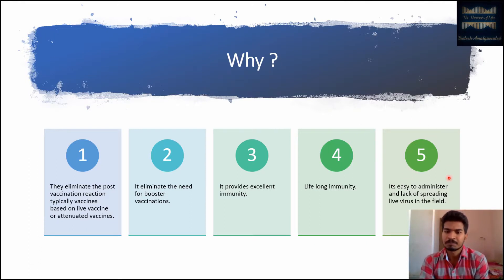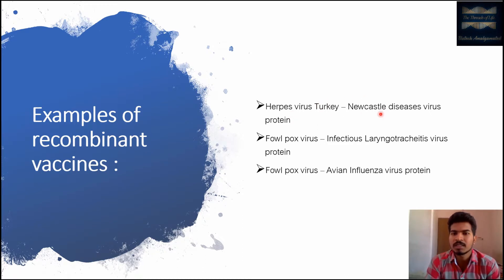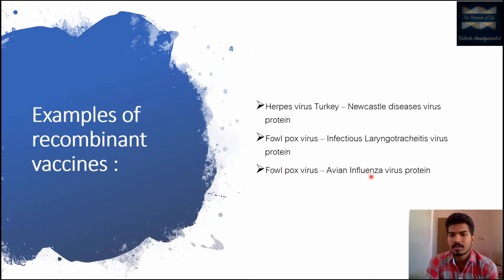Here are several examples of recombinant vaccines. The first is herpes virus of turkeys (HVT) that carries Newcastle disease viral protein — using this vaccine provides immunity against Newcastle disease. Fowlpox virus carrying infectious laryngotracheitis viral protein, and fowlpox virus carrying avian influenza virus protein, provide immunity against their respective diseases.